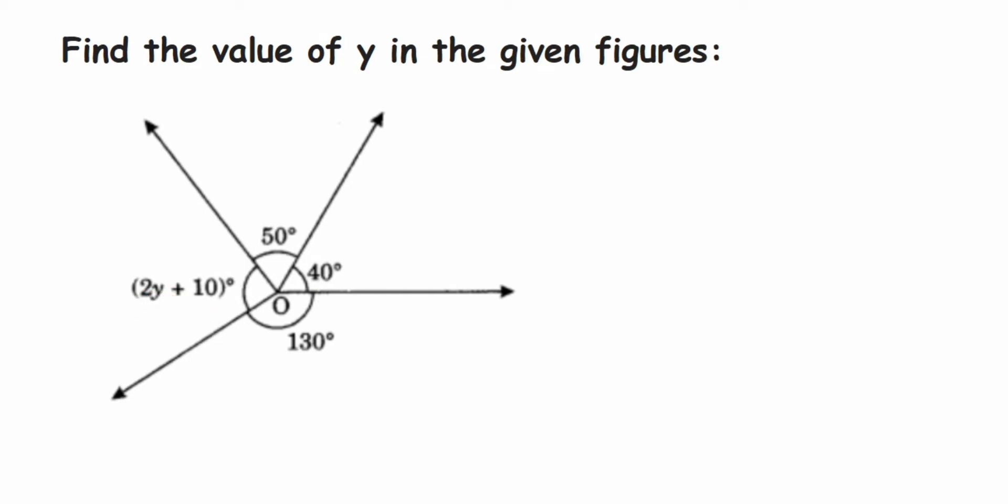Now we know that a complete angle is 360 degrees. Complete angle means suppose this is my starting point and from here if I go around and come back to the same point, it's called a complete angle and it's 360 degrees, it's like a complete circle.